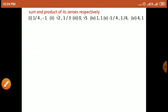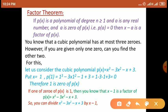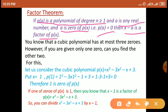Next topic is Factor Theorem. Friends, in class 9 you have already studied factor theorem. Any polynomial of degree greater than or equal to 1, and a is any real number — if a is a zero of p(x), that is p(a) is equal to 0, इसका मतलब remainder 0 होता है — then x minus a is a factor of p(x). यह factor theorem हमने class 9 में already study किया था।